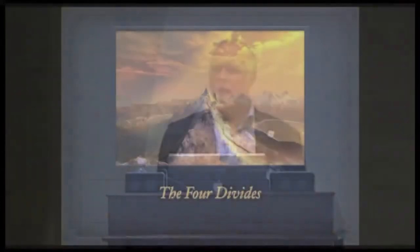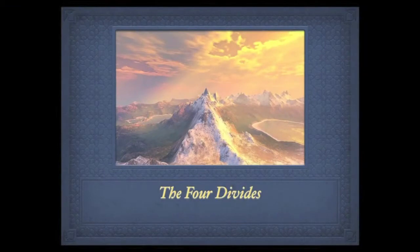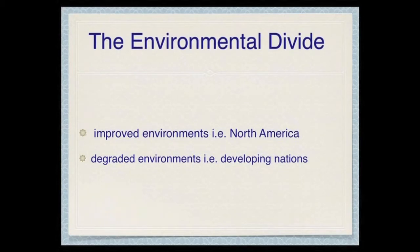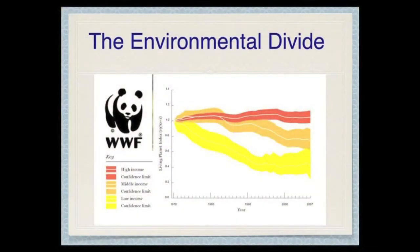The United Nations Environment Program talks about these issues in terms of four divides. The first they call the environmental divide, where they point out we've had improved environments in many ways in the rich countries. We see that in North America since the 70s — we have made gains with the Clean Water Act, the Clean Air Act, more control on pesticides and pollution. But we've actually seen degraded environments in many of the developing nations of the world. The World Wildlife Fund puts it together on this graph, showing those high-income countries' living planet index versus the low-income countries represented by the yellow.